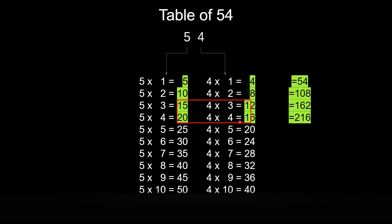20 plus 1 is 21 and 6, so 216. 25 plus 2 is 27 and 0, so 270. 30 plus 2 is 32 and 4, so 324.